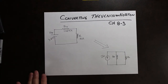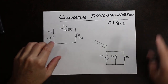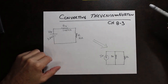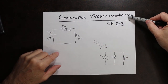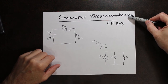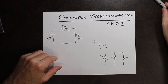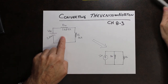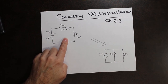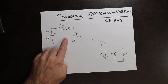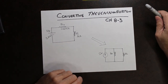Hey everybody, it's Mr. G again. Welcome back. What we're going to do today is something really quick. I'm going to show you how to convert a Thevenin circuit into a Norton circuit, or a Norton's back into Thevenin's. So for Thevenin's, we have an example — this is the example that we did before, example number one that we did in our Thevenin's calculations.